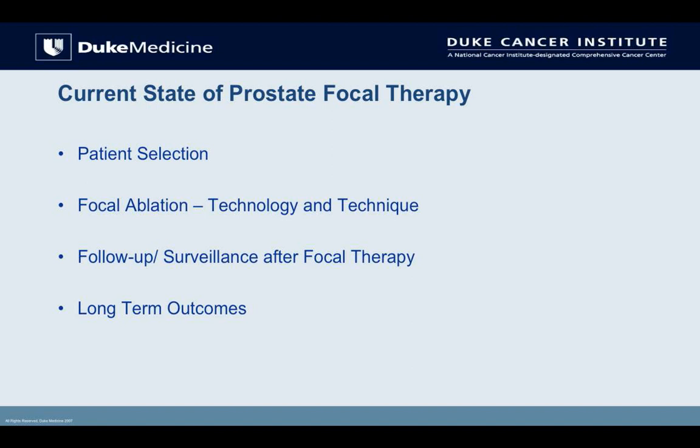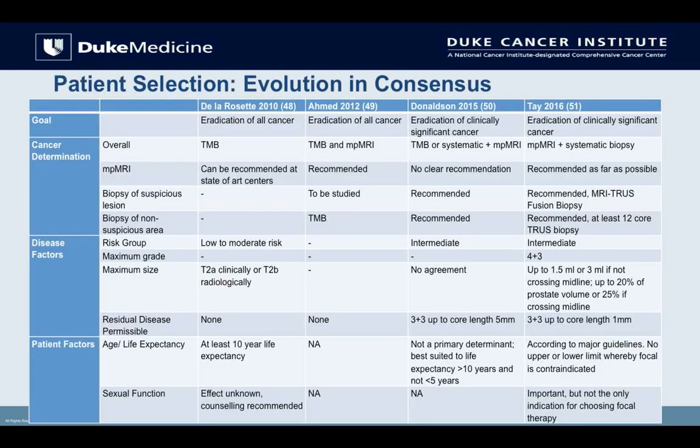There is contention with each of these categories. However, the ICUD — International Consensus for Urologic Disease — in 2015 put together several panels to try to reach consensus on these issues. In the absence of data and long-term clinical trials, we have to look towards consensus in an attempt to drive the field forward. Let's look at patient selection first, step by step.